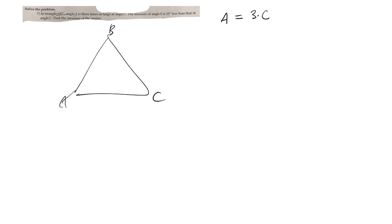The measure of angle B is 25 less than that of C. So if you take C and take 25 away, that gives you B. So A is 3C, and B is C minus 25, and C we can just call it itself.